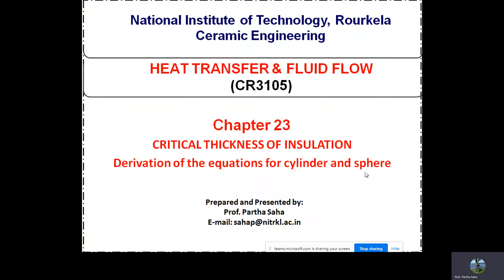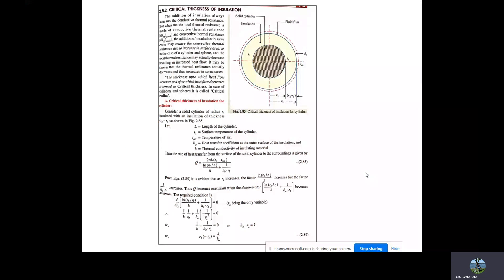Good afternoon. Today we're going to start Chapter 23, where we will talk about critical thickness of insulations — derivation of the equation for cylinders and spheres. Critical thickness is a very important parameter for any kind of heat pipes or refrigerating cylinders where heat loss is a prominent factor. To minimize heat loss, we generally provide insulation surrounding the pipes, and this insulation thickness is also very critical, so we have to mathematically derive the expression to find out where minimum heat loss occurs.